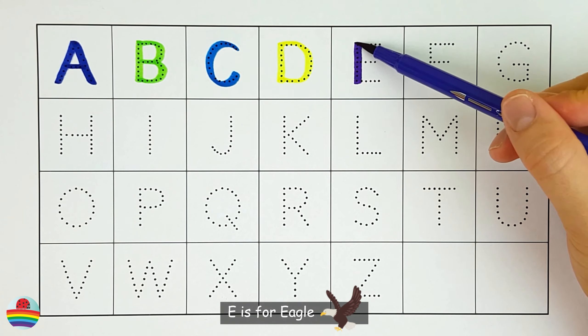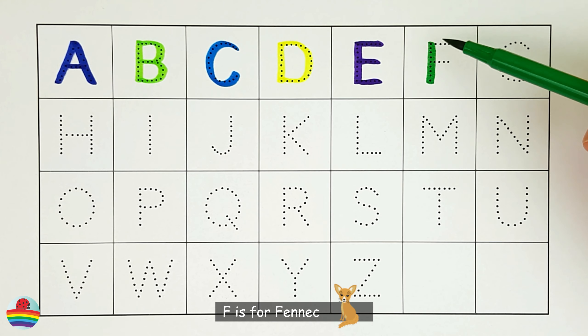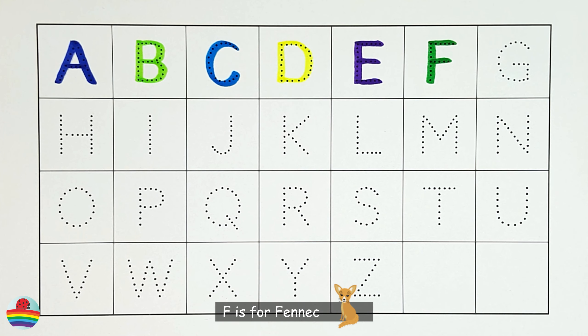E. E is for eagle. E. F. F is for fennec. F.